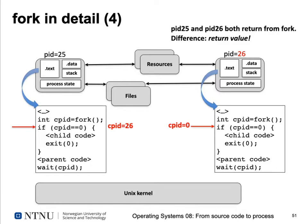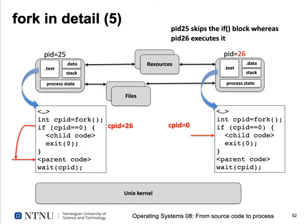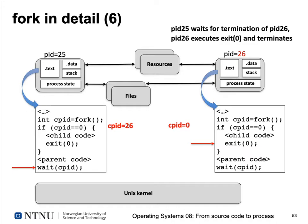Since the child's process ID is 26 in the parent, the parent skips the child's if-block and continues executing the parent code, eventually calling wait with process ID 26. The child process, having received zero, enters the if-block, runs its child code, and eventually calls exit — with or without calling exec. So process ID 25 waits for the termination of process ID 26, which was the return value passed to wait, and eventually process ID 26 exits and terminates.